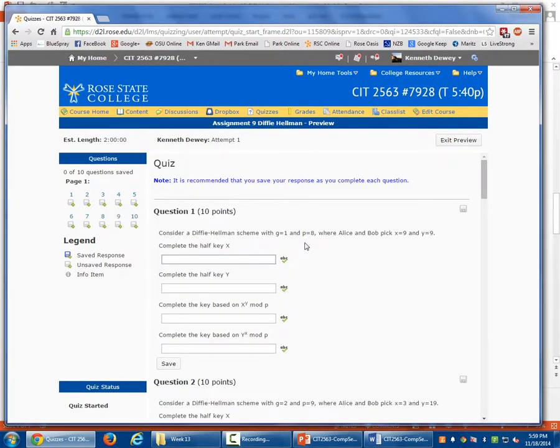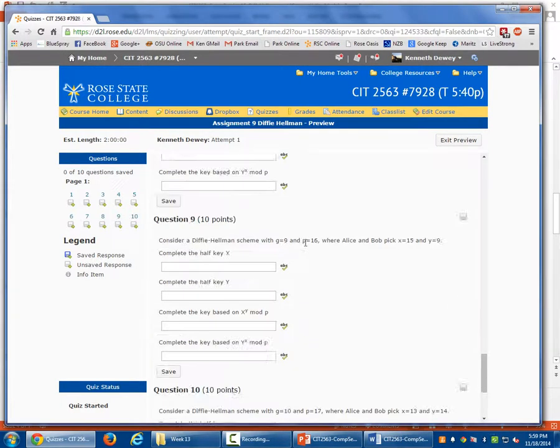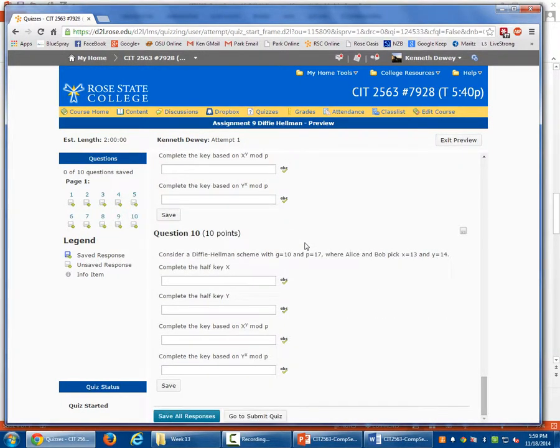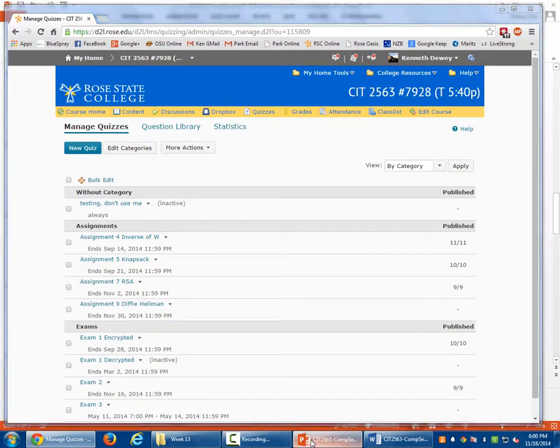But those are the exact same ones. So you can start this. You can print them out. Do whatever you want to do. And that's due? That's actually a good question. It's due on the 30th. So you got a week and a half to do it. The reason is AES was due this week, so I want to give you a little more time.